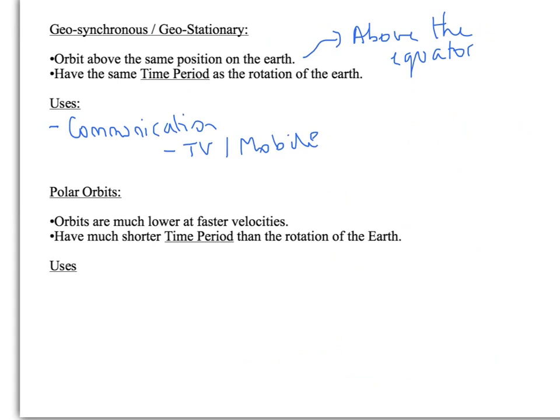There's another type called polar orbits where the orbits are going round over the poles. And they are travelling at much faster velocities in orbit, so they're much lower in the sky. And they actually have a much shorter time period than the rotation of the Earth, which is useful for mapping things. If you want a satellite that's covering lots of different parts of the Earth, it allows you to map lots of different parts of the Earth, which is very useful. So things like satellite imaging.